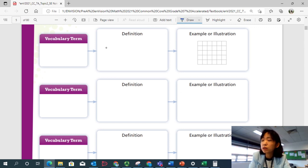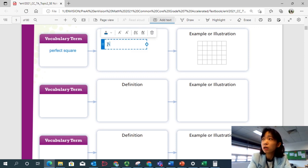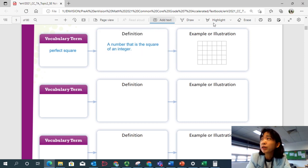So the first one is going to be a perfect square. And the definition of a perfect square is a number that is the square of an integer. You will learn about it in more detail later on. But it is a number that is the square of an integer. So in this example or illustration, you can make a square on the grid line. That's 4 by 4. So a number that is the square of an integer. So 4 squared is 16. So 16 is a number that is the square of an integer. So it's a perfect square.